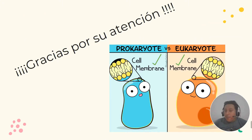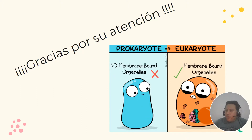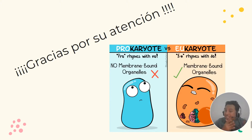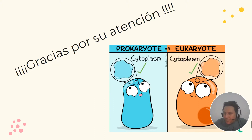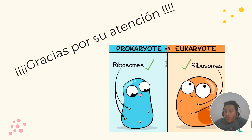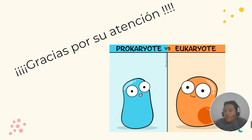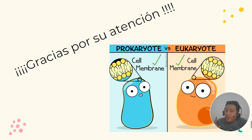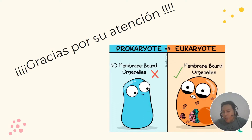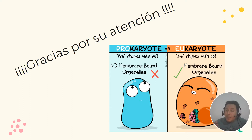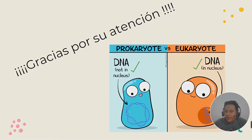Eso sería todo por hoy, pero antes de irnos vamos a generar una pequeña duda y discusión. En teoría conocemos dos tipos de células: las procariotas y las eucariotas. Las procariotas se caracterizan por ser células muy simples y pequeñas; en cambio, las eucariotas son mucho más grandes y complejas. Se dice que las células procariotas dieron origen a las células eucariotas. ¿Cómo podríamos explicar eso? Busquen la teoría endosimbiótica seriada y ahí encontrarán la respuesta. ¡Nos vemos en una próxima, chicos! ¡Se cuidan!